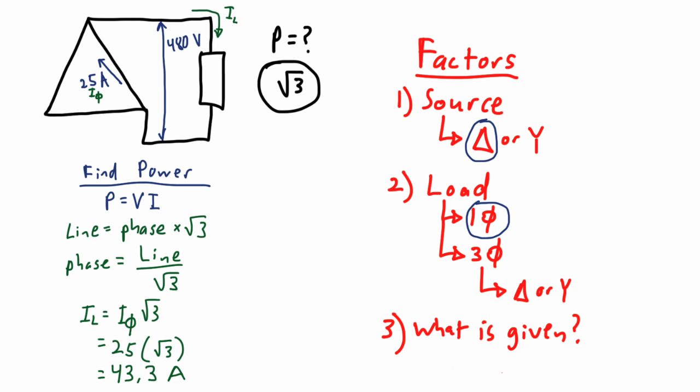So now we have our equation all lined up and filled out to find power at the load. We have P equals VI. Our V voltage is 480 line voltage, and our current at the line is 43.3. So P equals 480 times 43.3, which in the end yields 20.8 kVA.